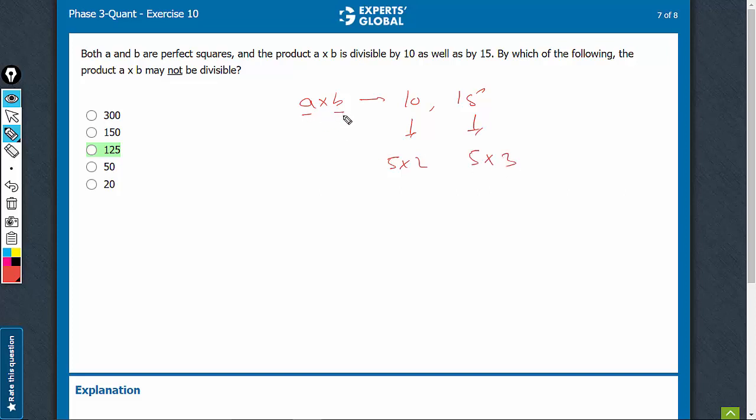Imagine both A and B are perfect squares. Therefore, A into B is not going to have odd powers of any of the prime bases.